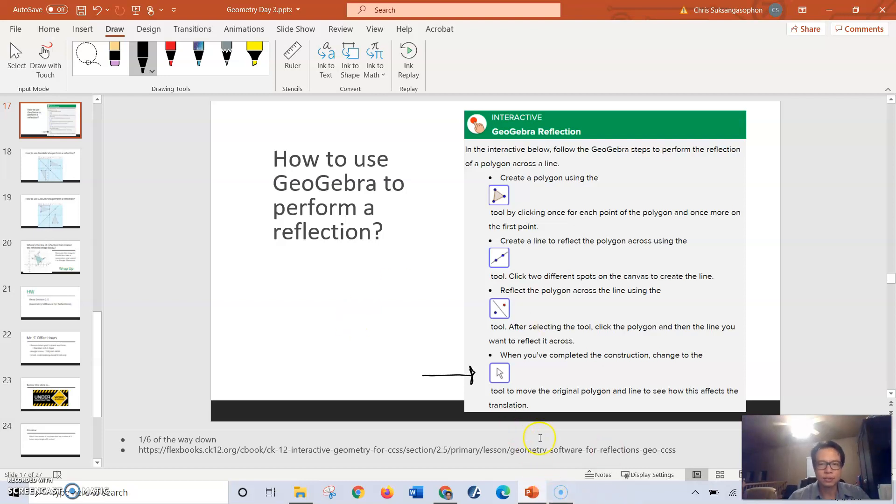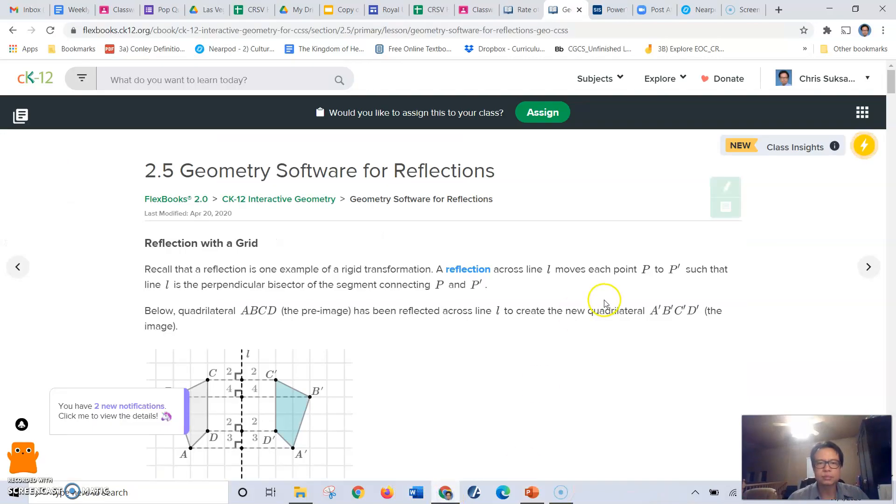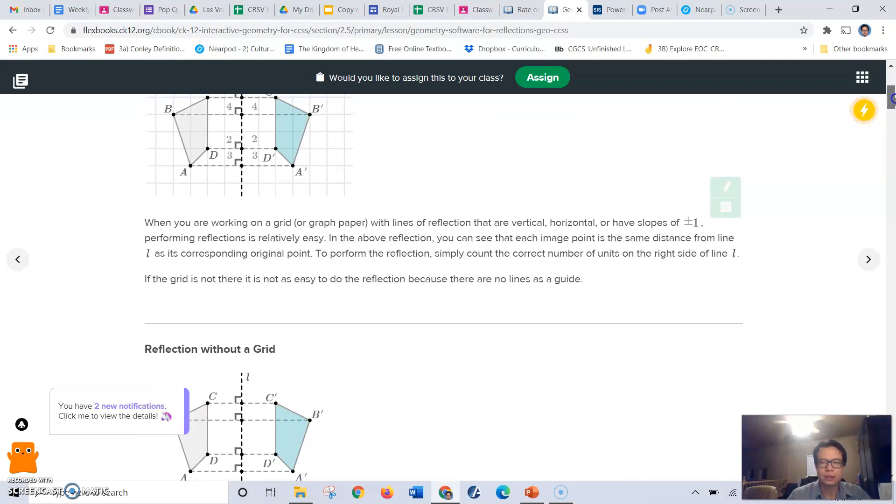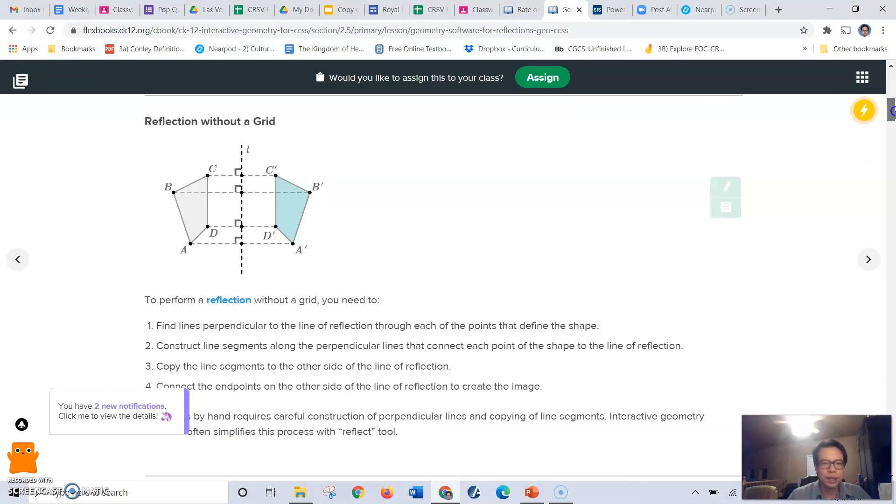So in order to get to GeoGebra, you might need to scroll down a little bit from your CK 12 section 2.5. GeoGebra is about one-sixth of the way down.